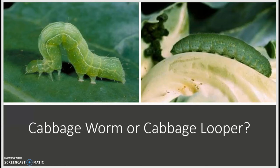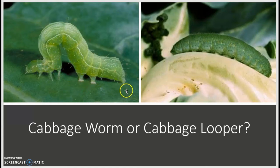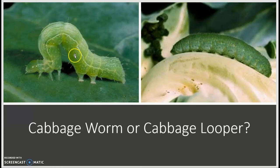The worm on the left is the cabbage looper. Its identifying characteristic is that it does not have legs right along its body. If you notice, it has three legs here, it does not have any legs here, and then two more pairs of legs here. Because of this, the cabbage looper has this iconic way of moving in which it forms a loop, a hunch, as it moves.